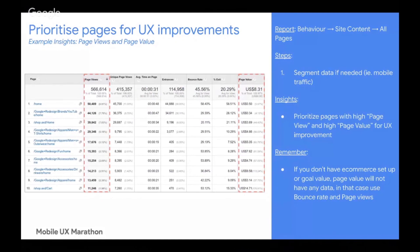This is an all pages report found under Behavior, Site Content. We will look at two major insights: page views and page value. Once you find the product of page views and page value, you know which pages on your website are most valuable in terms of revenue generation. If you do not have e-commerce or goal value set up, you can use bounce rate or page views as a proxy.